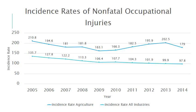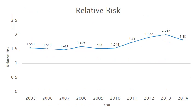This chart shows the incidence rates of non-fatal occupational injuries for the time period of 2005 to 2014. The incidence rate of non-fatal injuries in the agricultural industry was higher than the incidence rate of injuries in all other industries for each year studied. The relative risk of non-fatal occupational injuries in the agricultural industry appears to overall increase from 2005 to 2014, though the increase seen is small.